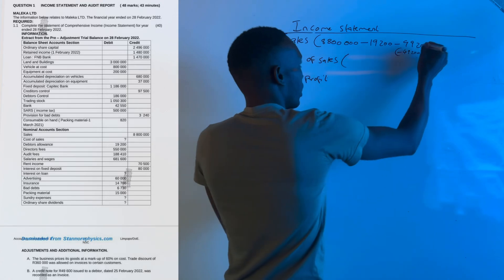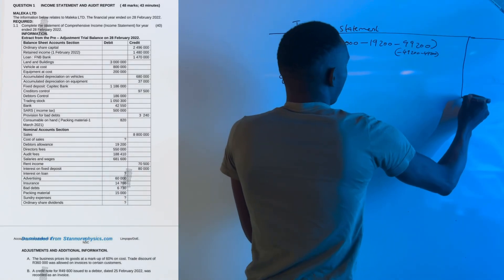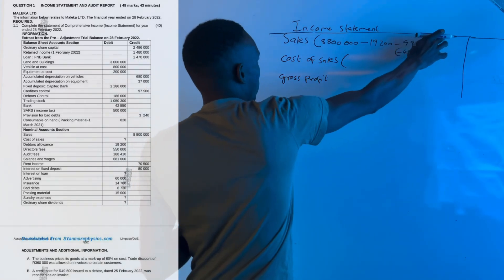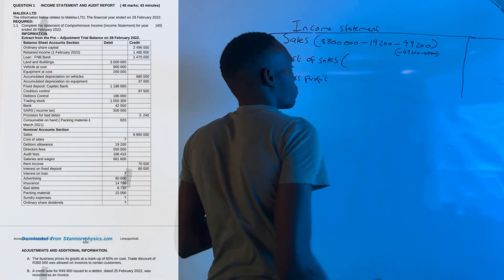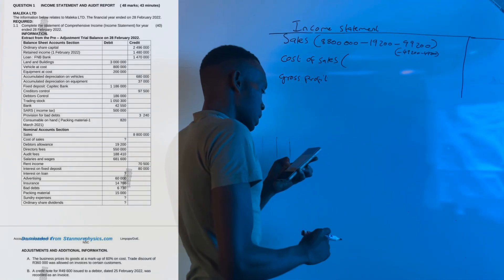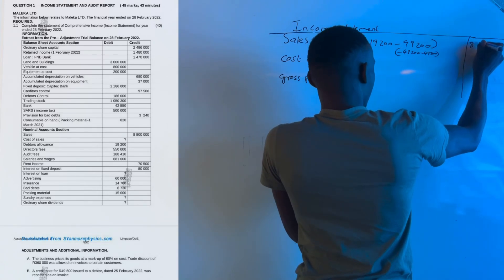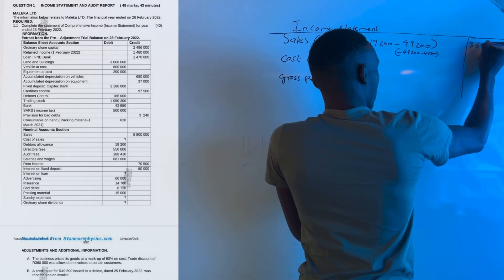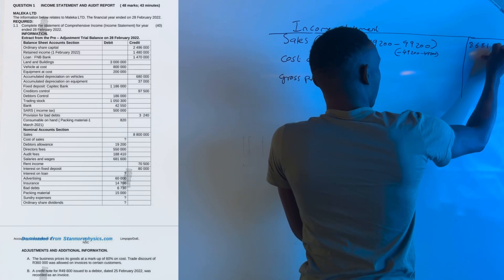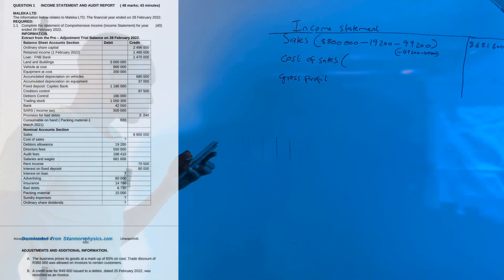Then we can close off and get our sales. If you didn't get this correct, obviously cost of sales and gross profit will be wrong, which means your income statement will be complicated from the beginning. 8 million 681,600. Then we have to adjust cost of sales.